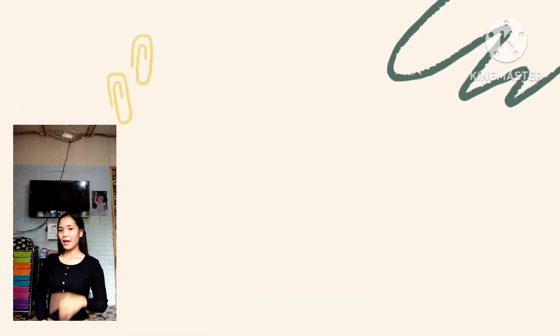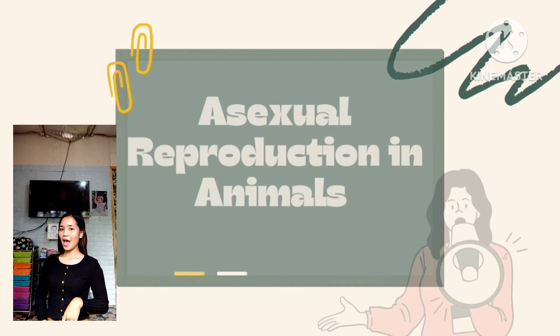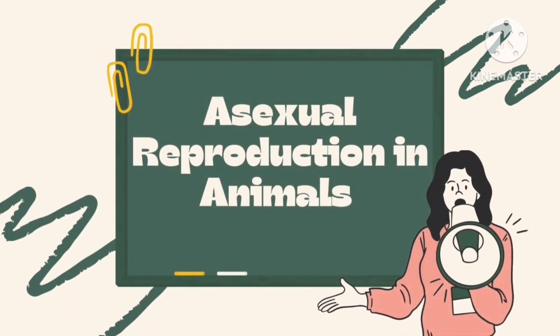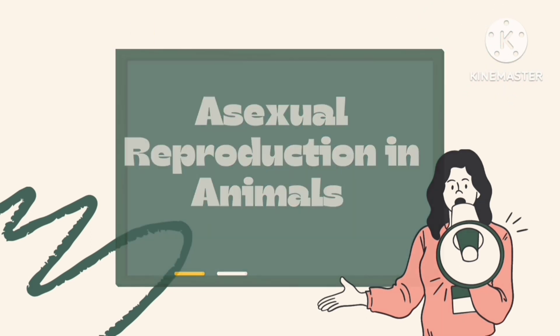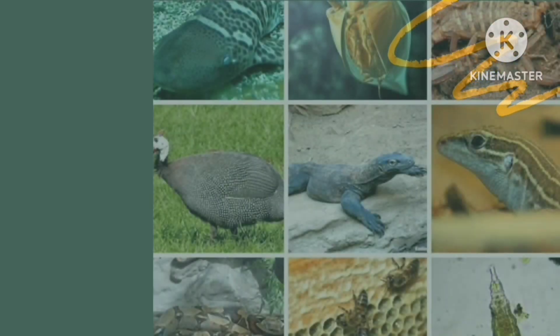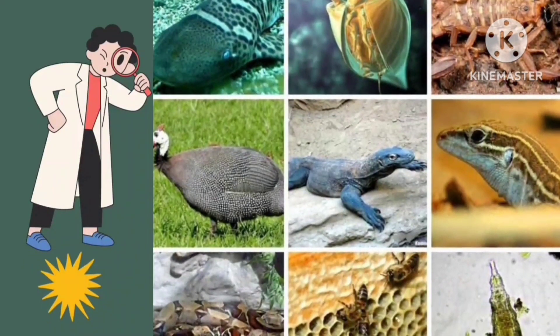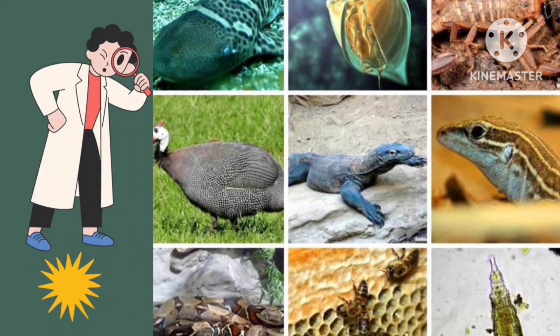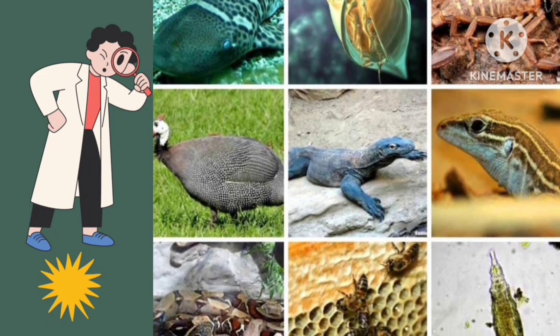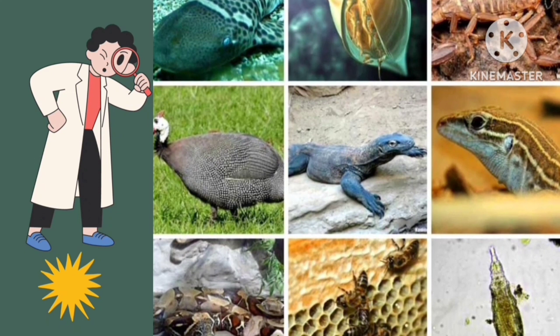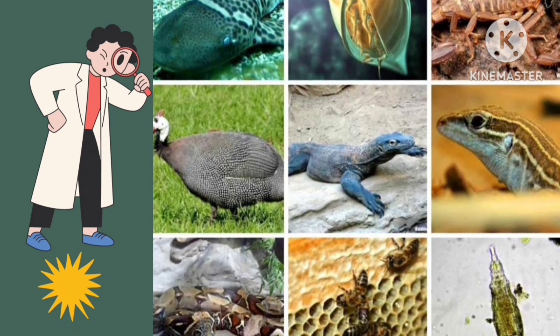Now let's talk about asexual reproduction in animals. While most animals reproduce with two parents, some animals can reproduce with just one parent only. Asexual reproduction does not need one male and one female parent to produce an offspring. A single parent organism simply makes identical copies of itself. Asexual reproduction is the primary form of reproduction for single-celled organisms such as archaea and bacteria.